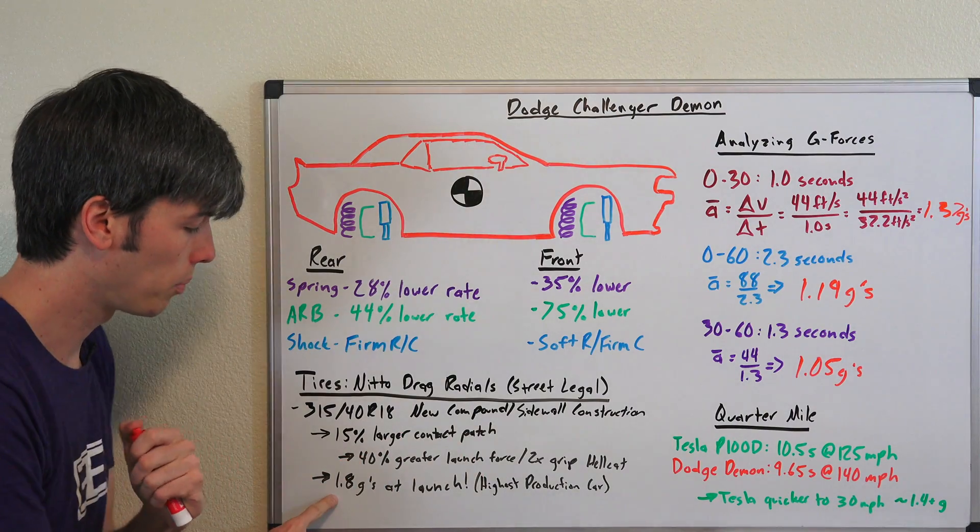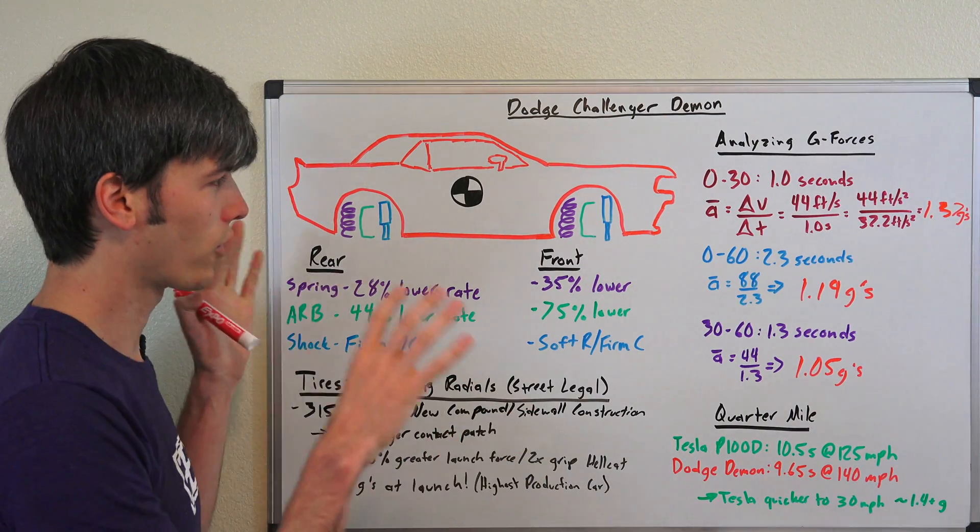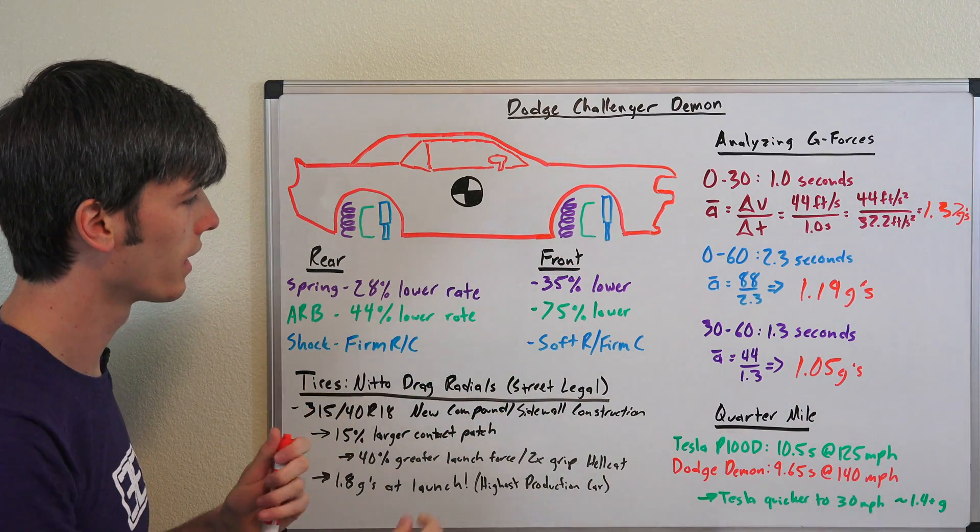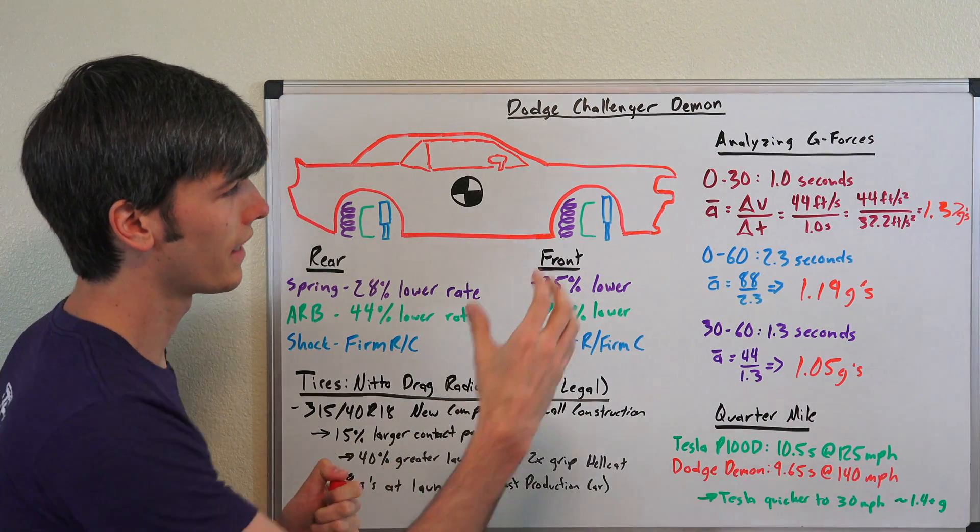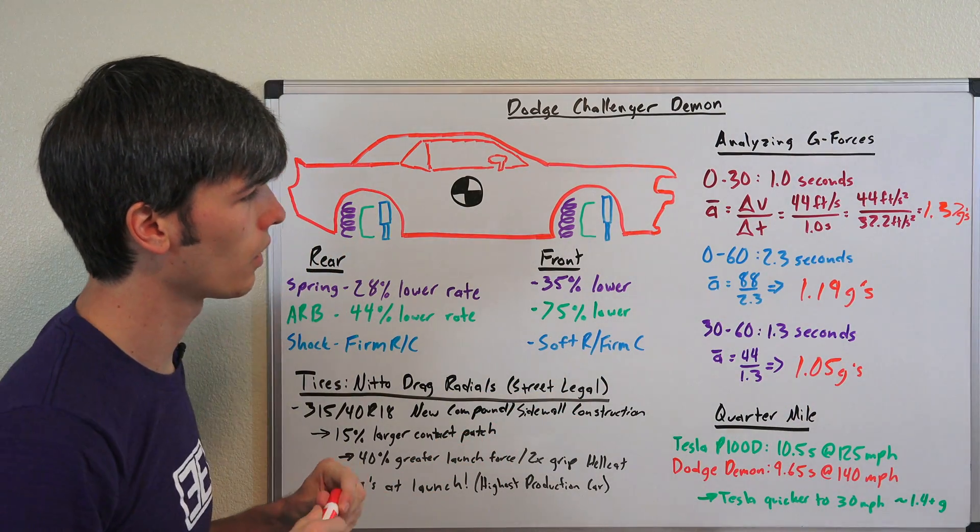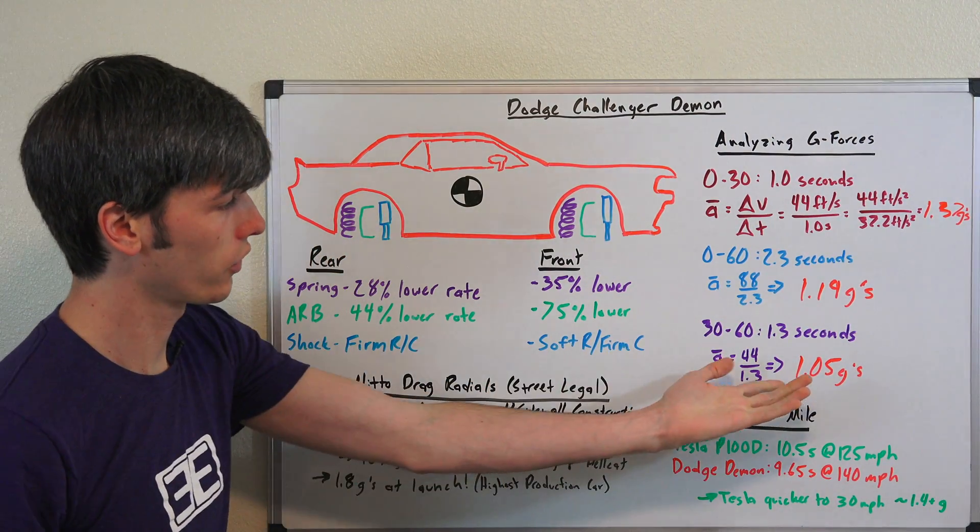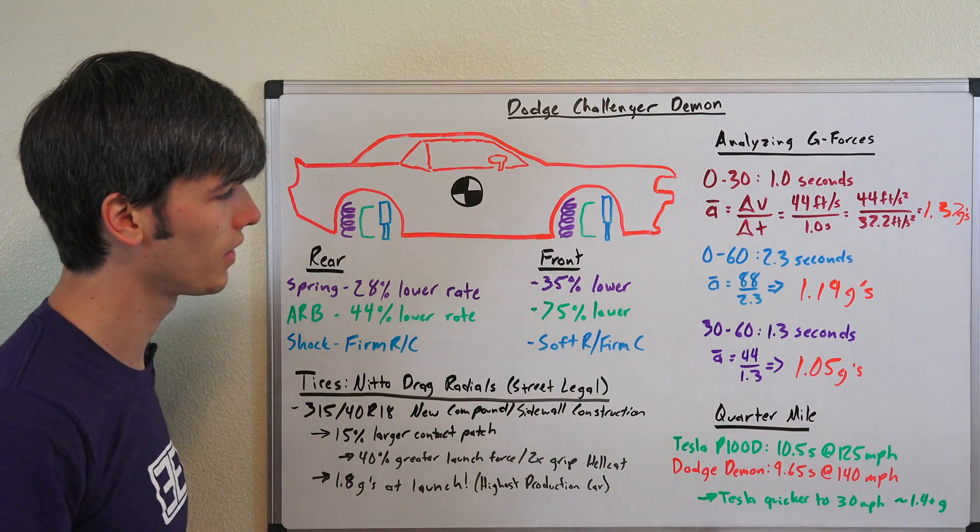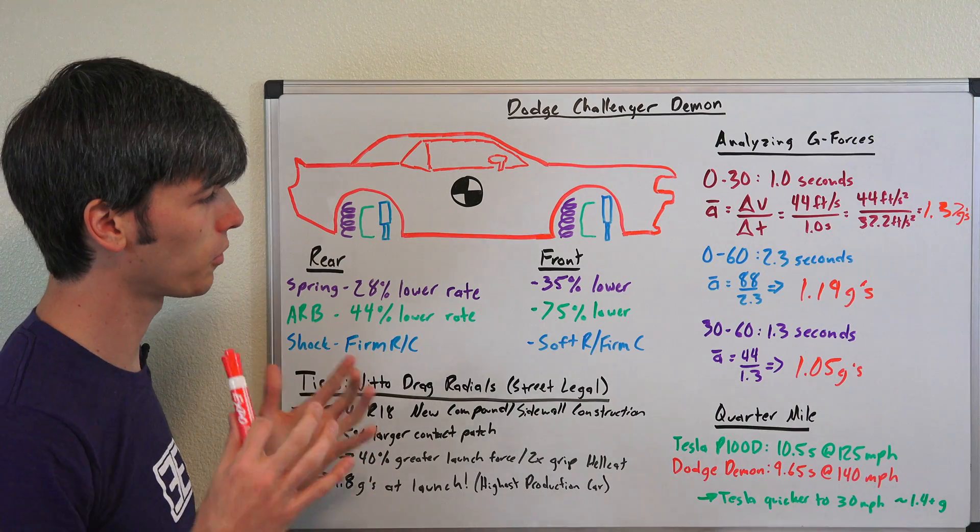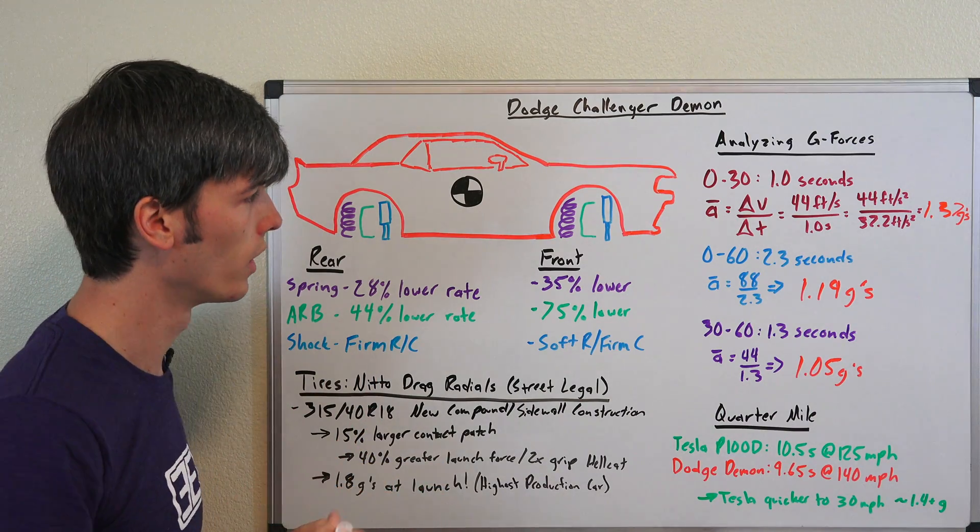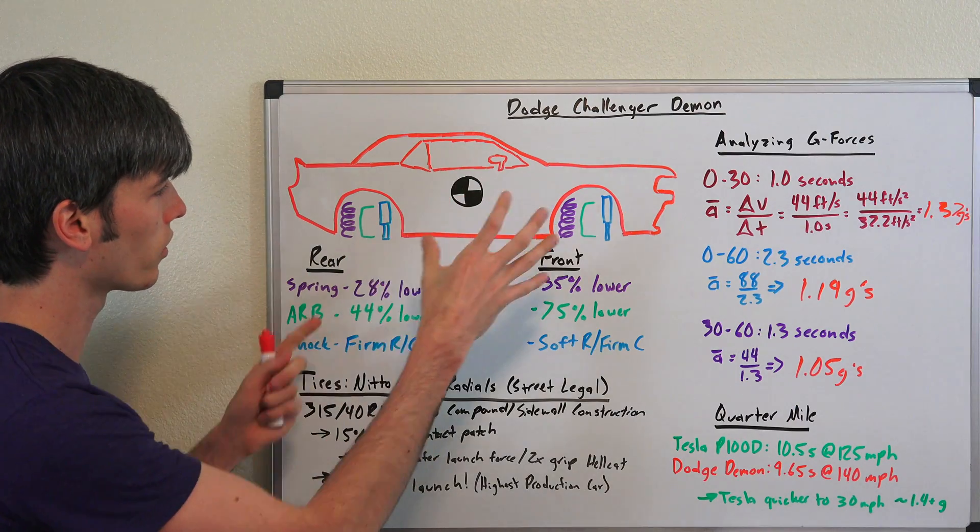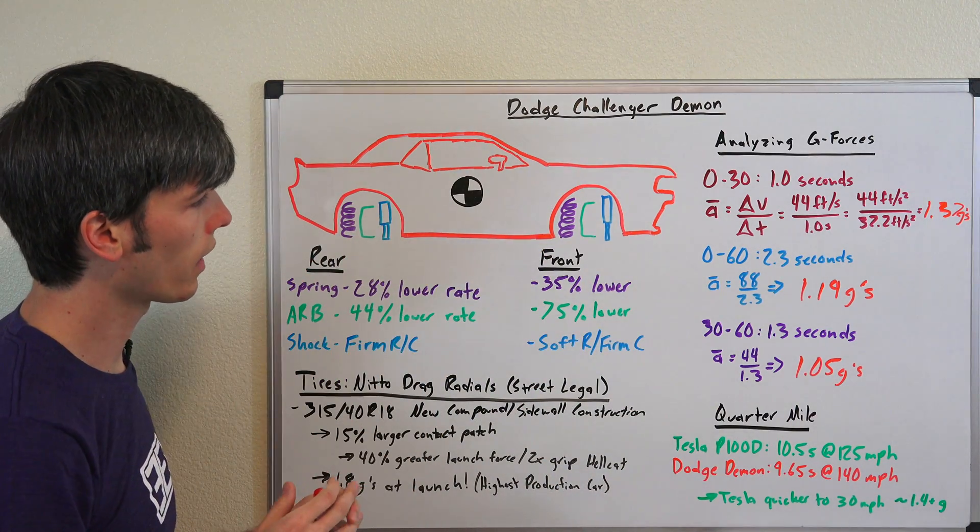So, Dodge is claiming a peak G-force of 1.8 G's. That's right at the initial launch. It's kind of this shock of acceleration right at the very beginning. Very brief moment. And then you can see the average G-force is going to be much lower. Still extremely impressive. The fact that it's accelerating over 1 G from 30 to 60 miles per hour is pretty insane. Especially for a rear wheel drive vehicle.